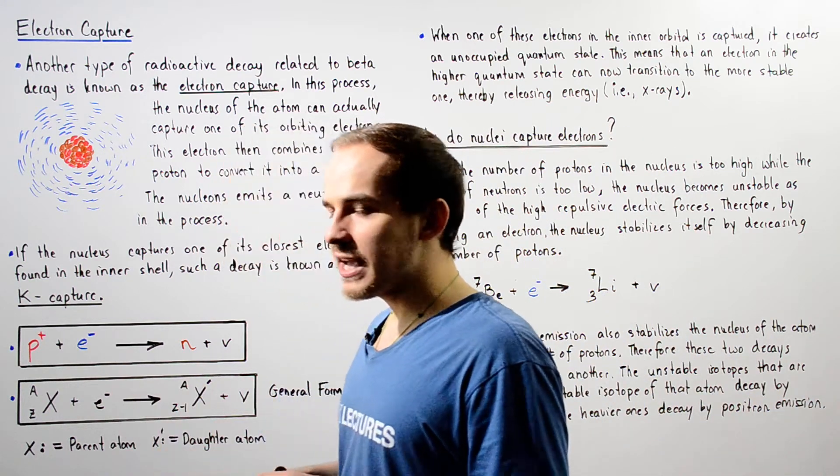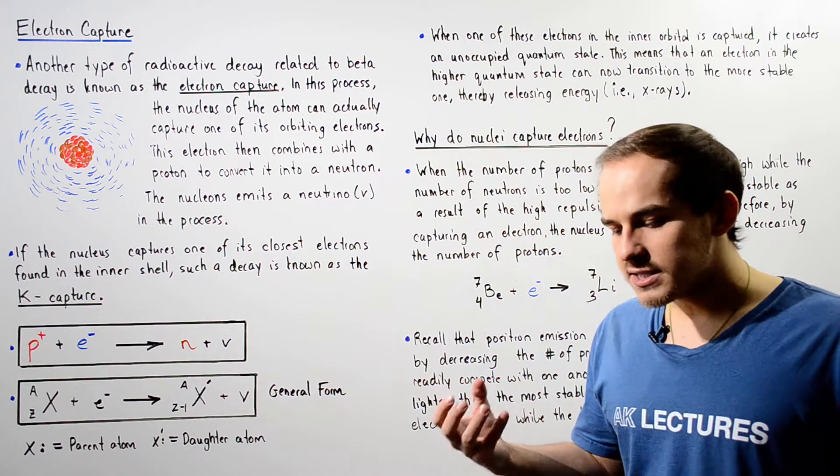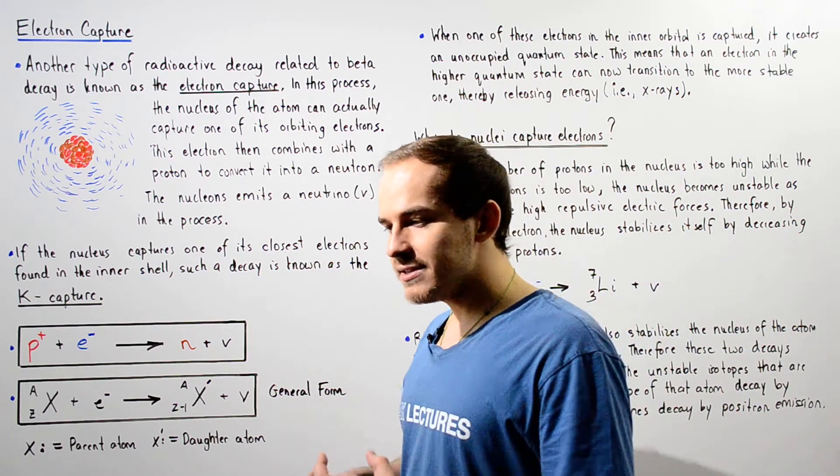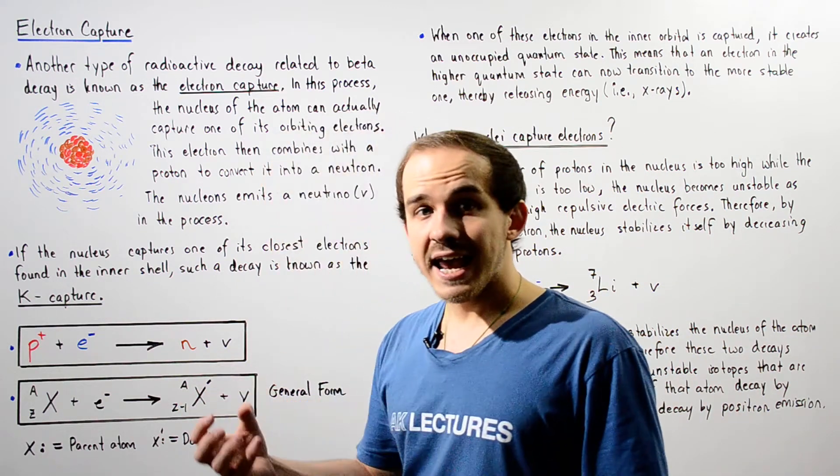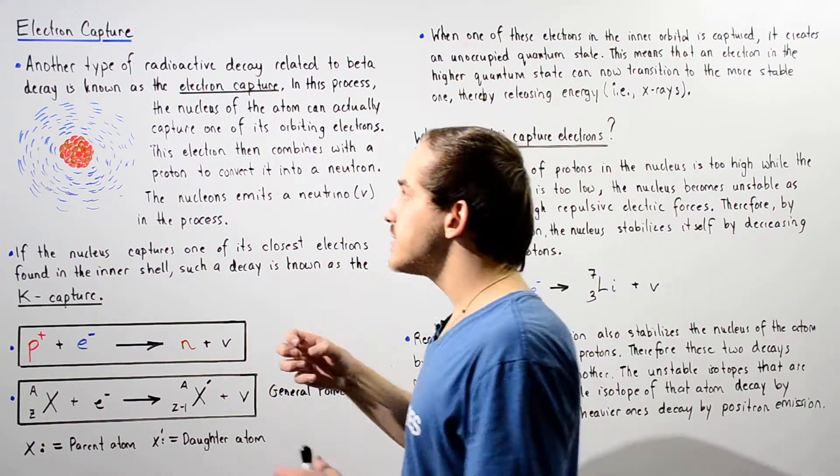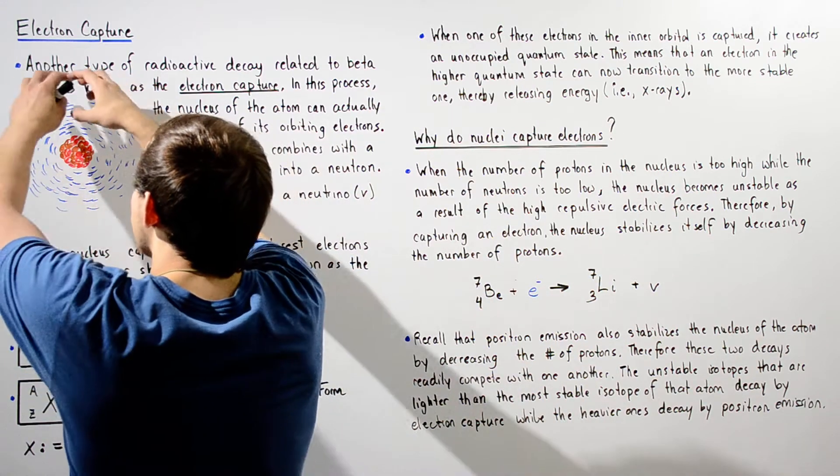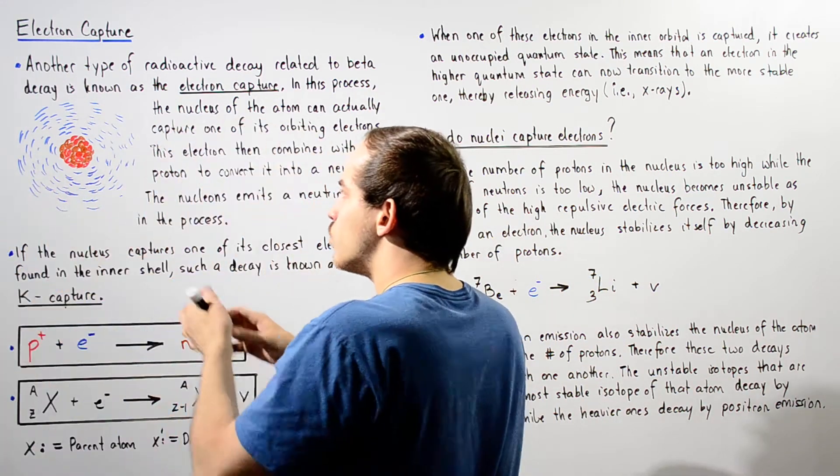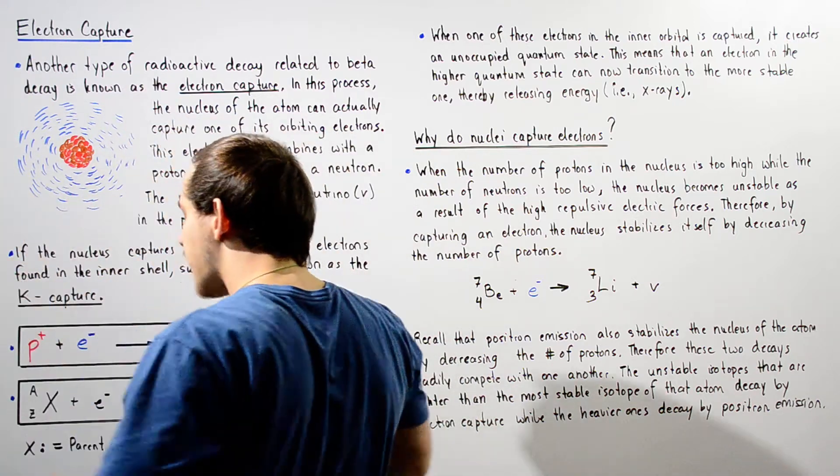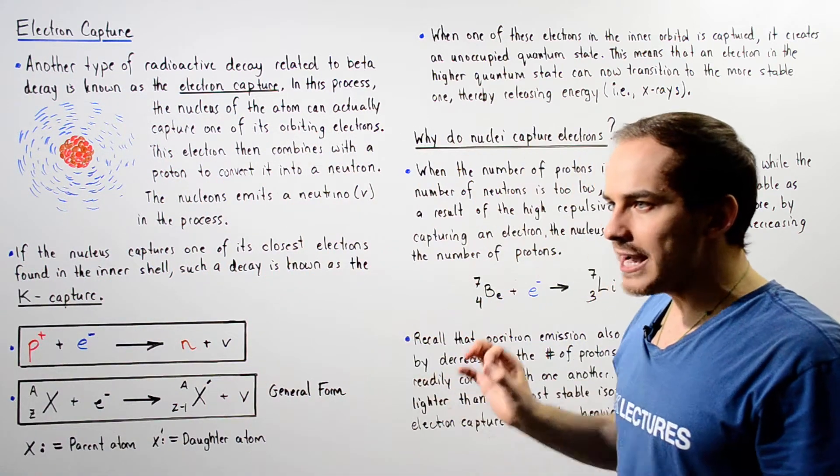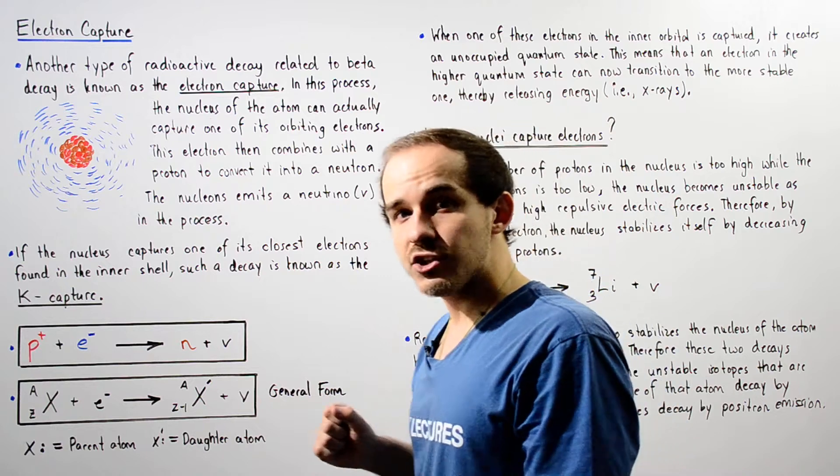Now in the electron capture process, our unstable nucleus of the atom basically captures or takes an electron that is found somewhere around that nucleus within the electron density and brings that electron inside that nucleus.